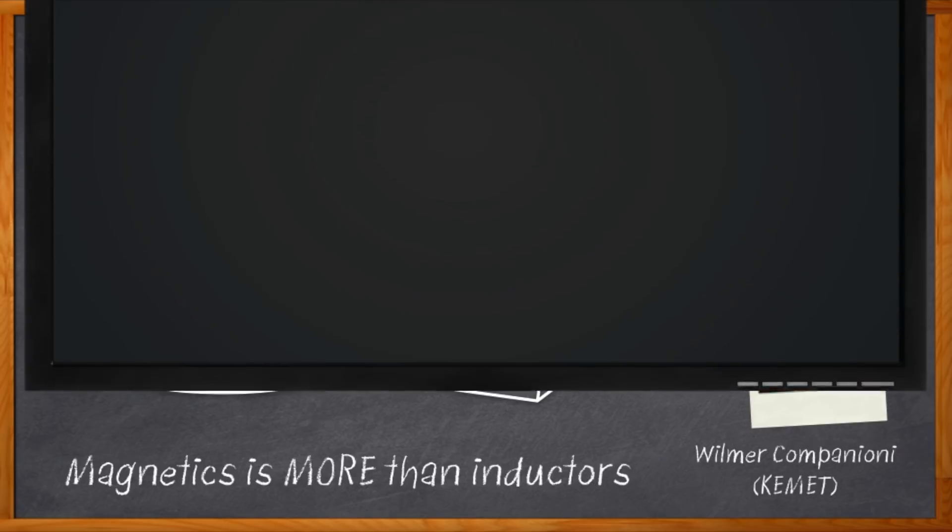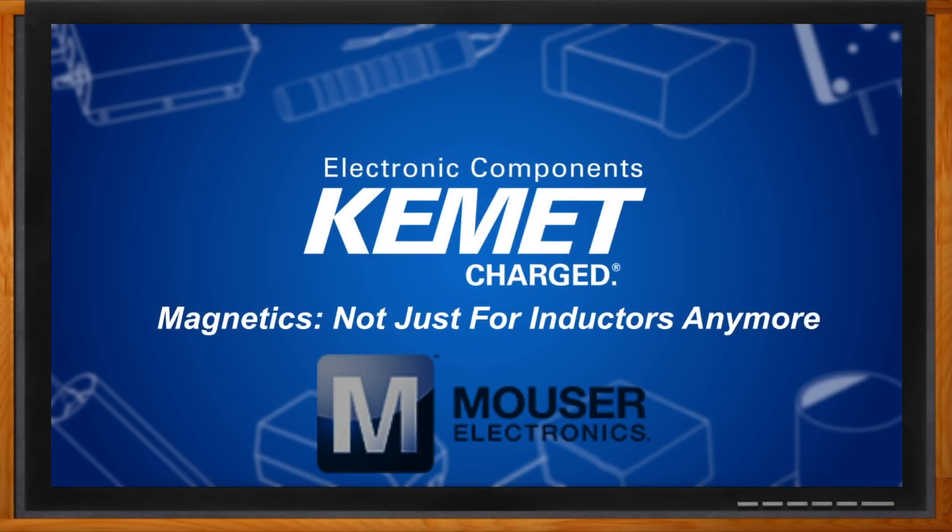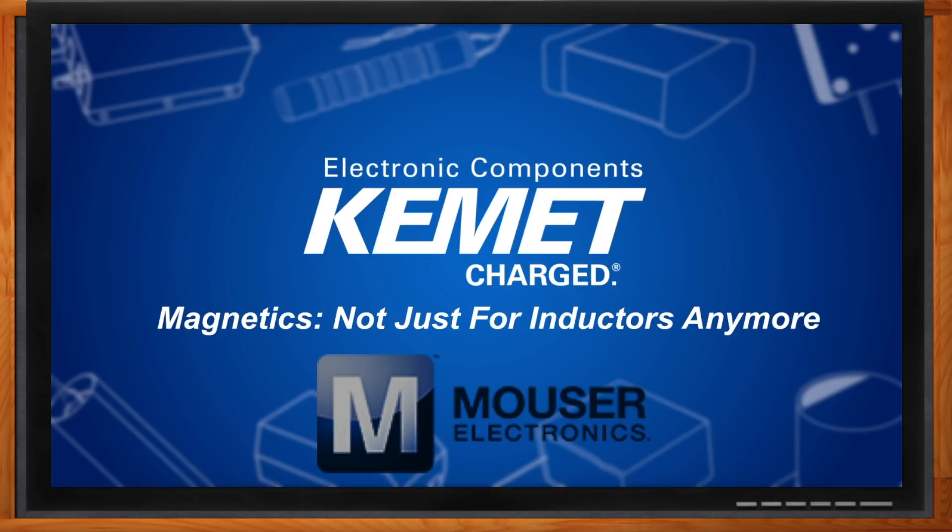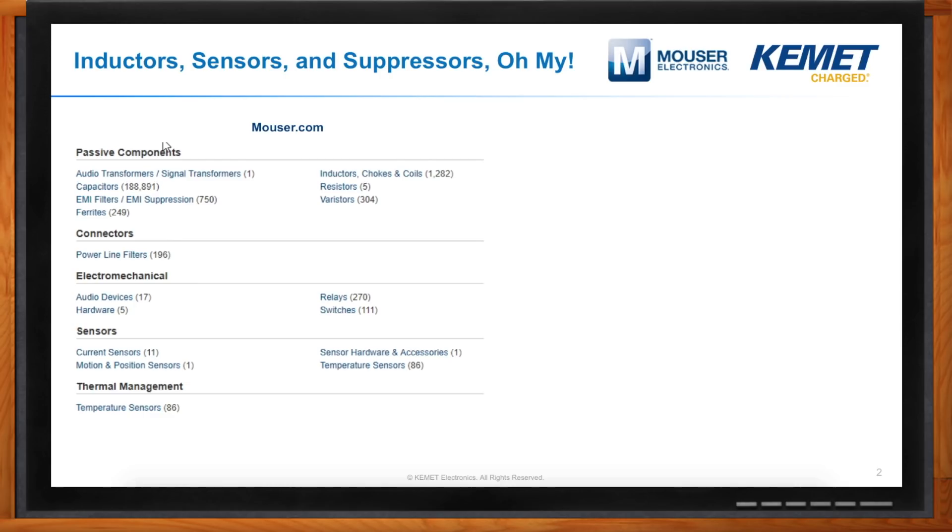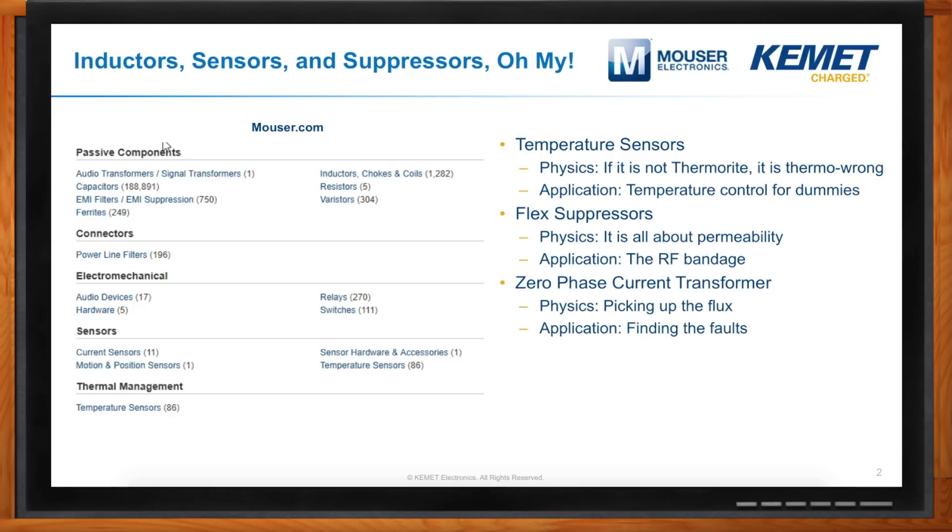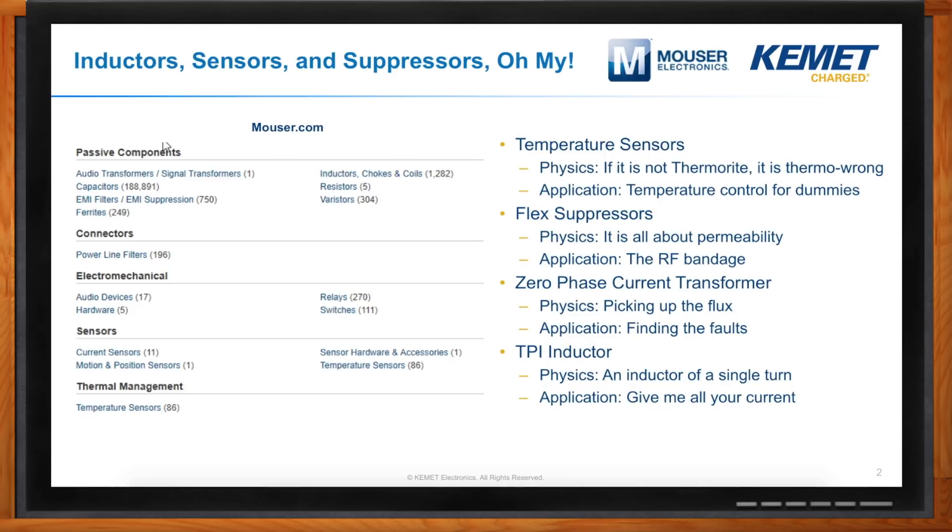And before we get started, throughout this broadcast, there will be various links that you can click for more information about this topic. Hi, Wilmer. Thank you so much for joining me. Hi, Amelia. It's great to be here. Okay, so when it comes to inductors, magnetics are usually the primary topics of conversation. But there's other cool stuff that you can do with magnetics, right? Yeah, that's right. So, as you mentioned, magnetics, they're not really just for inductors anymore. There's lots of different stuff you can do with them. If you take a quick look at our parts page here on mauser.com, we have several different things, and some of which are more than just the expected capacitors from Kemet. Some of them are temperature sensors, flex suppressors, zero-phase current transformers, and what we call our TPI inductors. And we'll go into the physics and applications for each of these. Okay, great. Let's start with the thermal sensors.